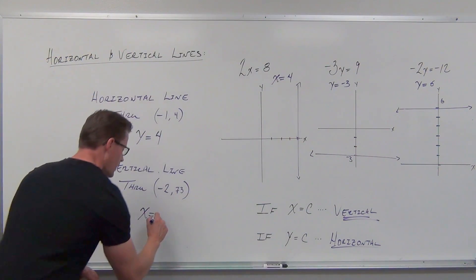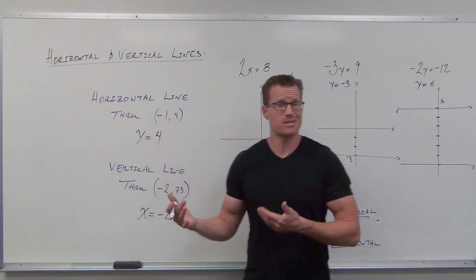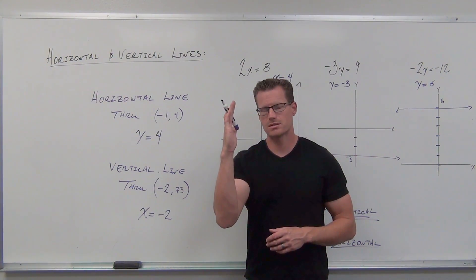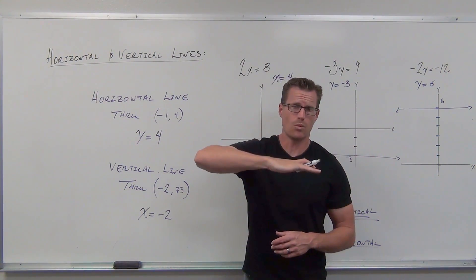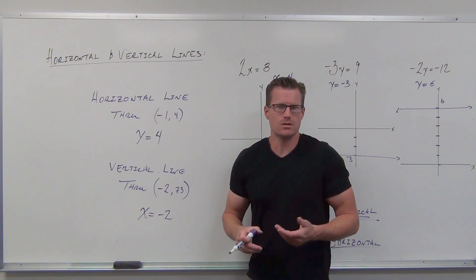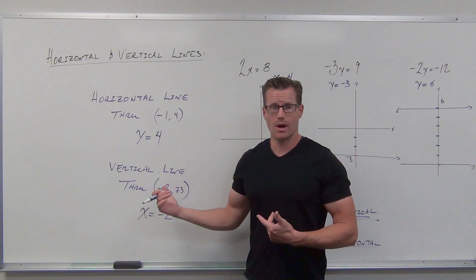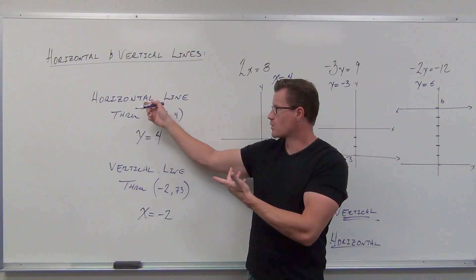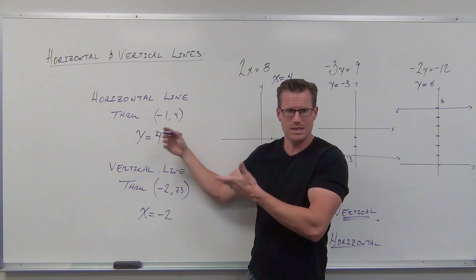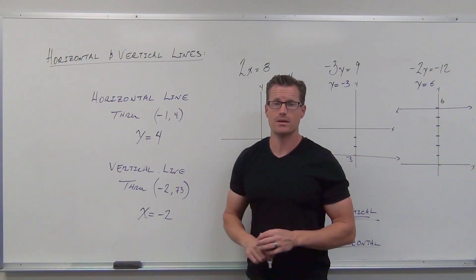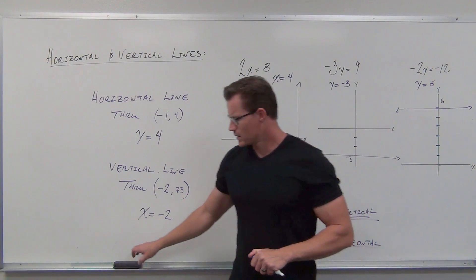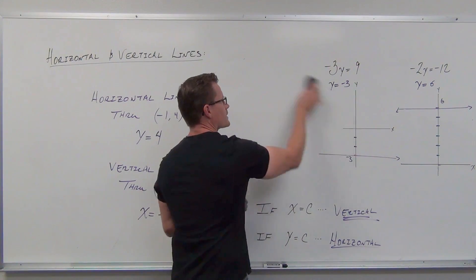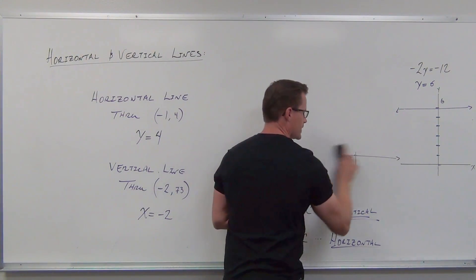That's how we go from a point to an equation. You basically look at the point and identify what variable you need. For vertical, you need x. For horizontal, you need y. Identify the coordinate given to you. You can clearly graph it, but it's telling you what it is — that's horizontal and it goes through that point. This is just finding the equation of a line. Now we've got to talk about parallel and perpendicular a little bit.